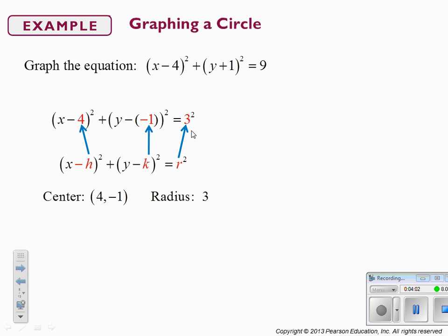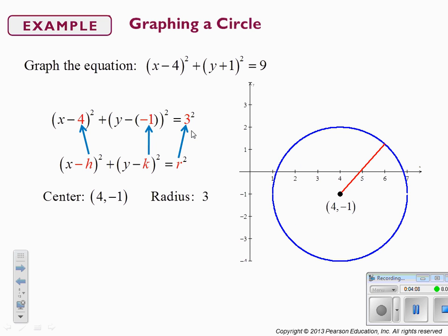We plot the point (4, negative 1) on our graph. Then when graphing, I count to the right 3 units and put a dot, count north 3 units and put a dot, west 3 units and put a dot, south 3 units and put a dot. That way I have at least four coordinates on my circle that are actually accurate. The rest I'm sketching, so it won't be a perfect circle.